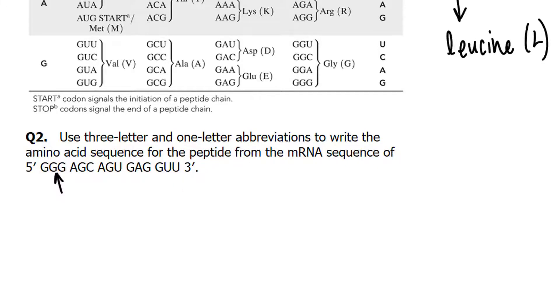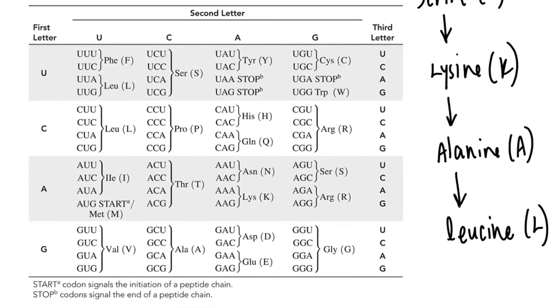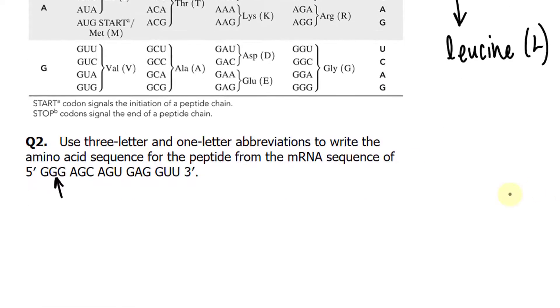The first codon is GGG. G, then G, and looking within that section — glycine. That's the simplest amino acid you can have. Glycine is abbreviated G.